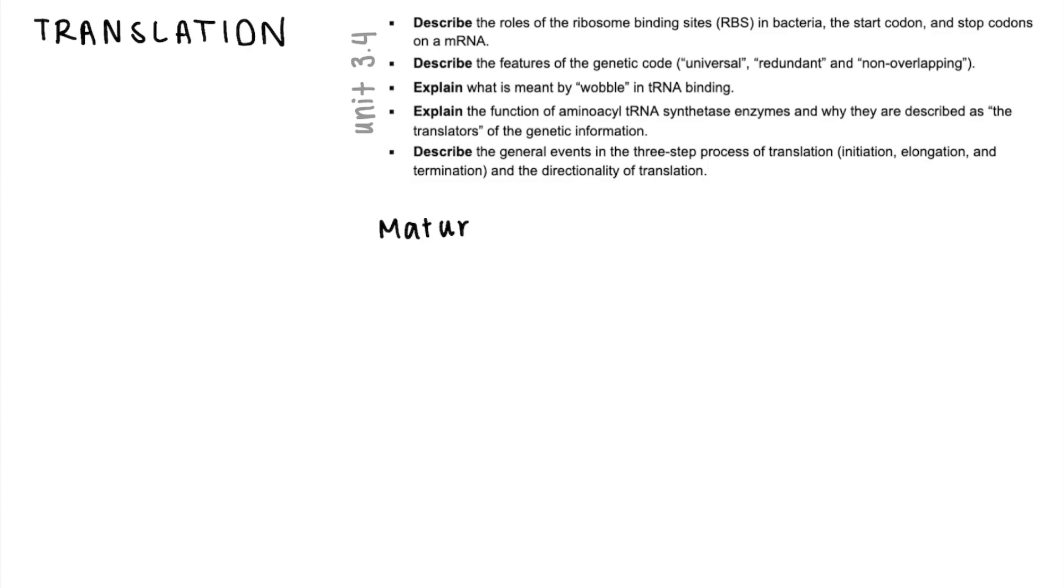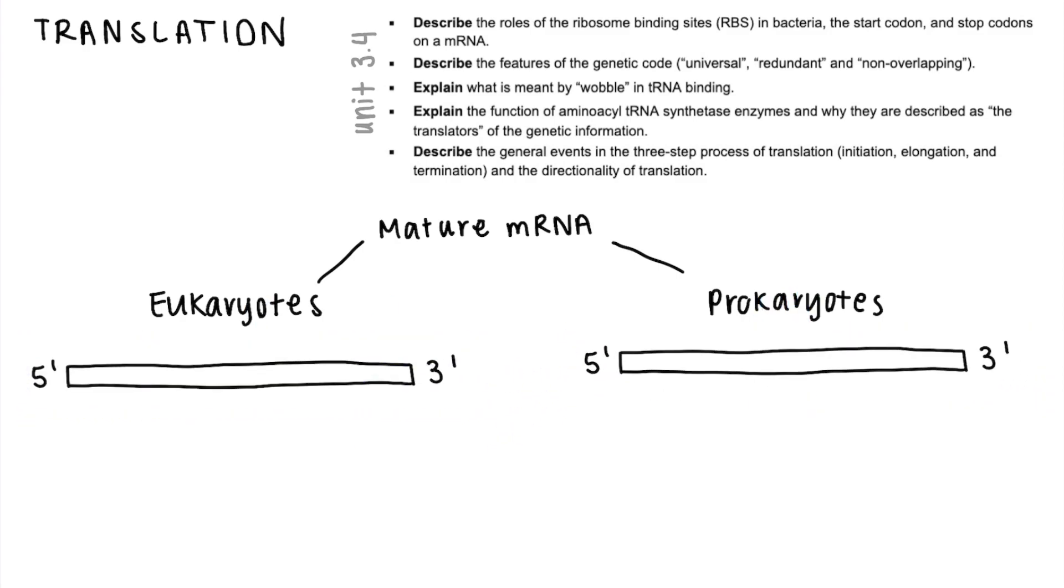I wanted to start off by looking what a mature mRNA that's ready to be translated would look like in a eukaryote versus a prokaryote. So as we saw before with eukaryotes, the immature mRNA goes through some processing so the thing closest to the 5' end will be the 5' cap.